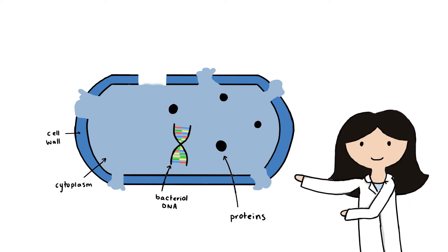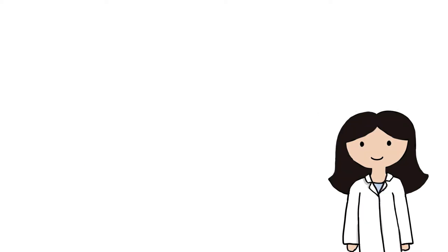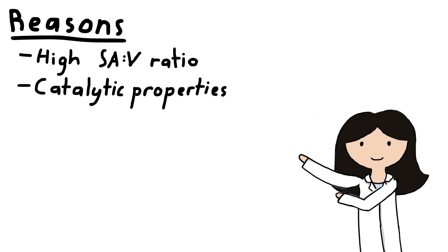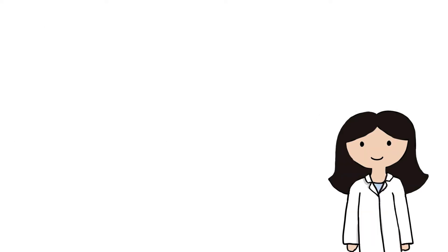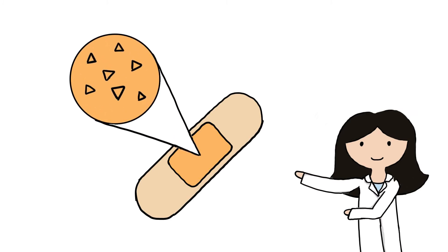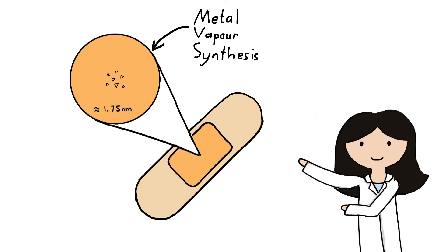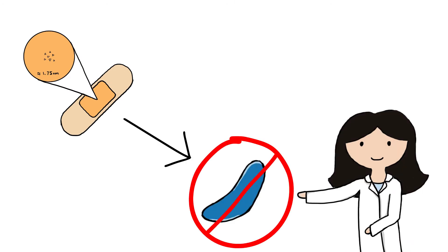This antimicrobial activity is increased with silver in the form of nanoparticles. This is a result of their high surface area to volume ratio and the unique chemical and physical properties which increase their rate of reaction and effectiveness against microbes. Hence, silver nanoparticles can be added to dressings through processes such as metal vapour synthesis, which produces extremely small silver nanoparticles averaging around 1.75 nanometres in diameter, giving the bandages strong antimicrobial properties.